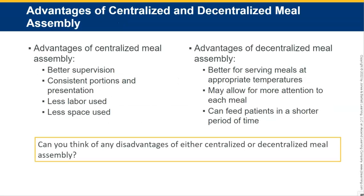Advantages of centralized meal assembly: better supervision — if there's only one supervisor, they can oversee the entire process for the entire hospital. Consistent portions and presentation, as supervisors in that kitchen monitor portion sizes and presentation. Less labor is used because there's only one kitchen. And less space is needed — only one kitchen instead of two or three.